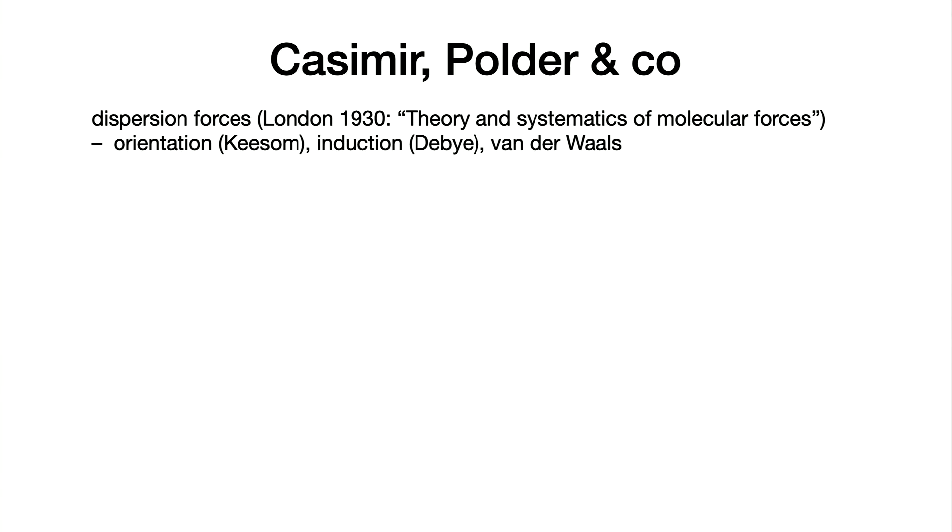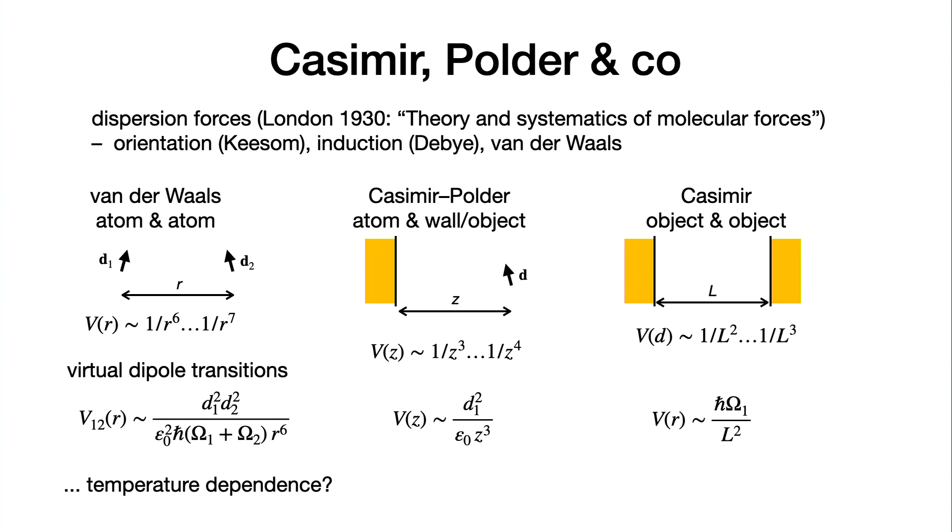So Casimir-Polder. The field that London tried to systematize is the field of dispersion forces. It arises between objects that have no net charge but they carry dipole moments. If these are permanent, you can orient them randomly. Then you have some kind of non-polarized mixture. But if you align them with an electric field, for example liquid crystals would be maybe an example, then you can get orientation, an order parameter that describes this alignment, and then you can have interactions.